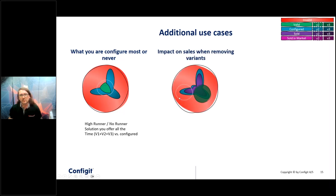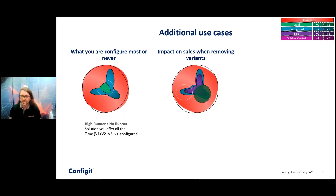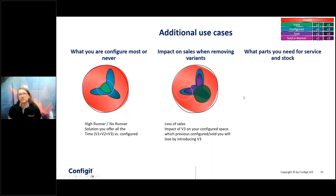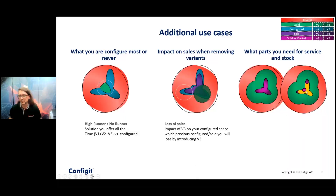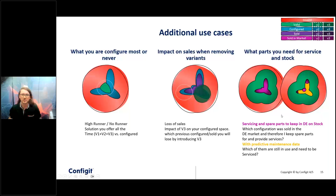When you make changes you can also figure out which options you are losing. For example, if you're forced to no longer sell into a certain market, you can figure out what sales you're losing. This is useful before deploying a change — to check if it has a high impact on what you're selling or if you're only removing options that aren't being sold anyway. The same applies to services: for spare parts, if you also have predictive maintenance and know which machines are still in use, you only need to keep spare parts on stock for variants you've actually sold.